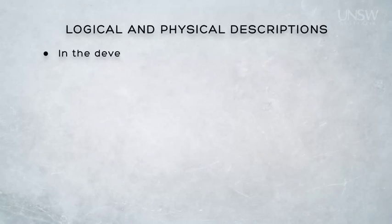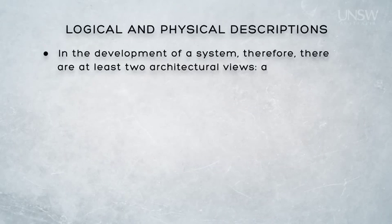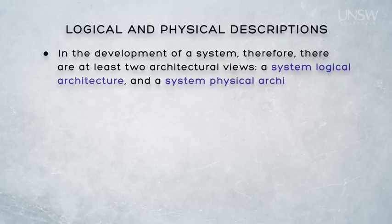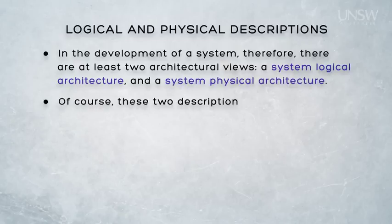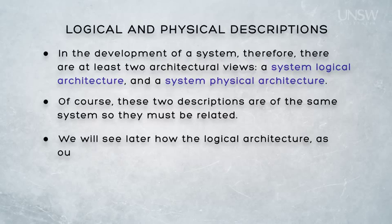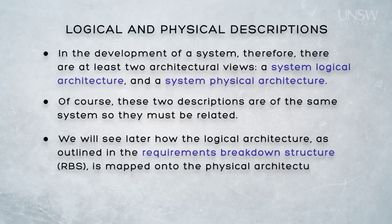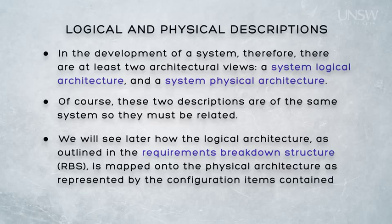In the development of a system, therefore, there are two architectural views: a system logical architecture and a system physical architecture. These two descriptions are of the same system, so they must be related. We'll see later how the logical architecture, as outlined in the requirements breakdown structure, is mapped onto the physical architecture as it's represented in what we call the work breakdown structure.